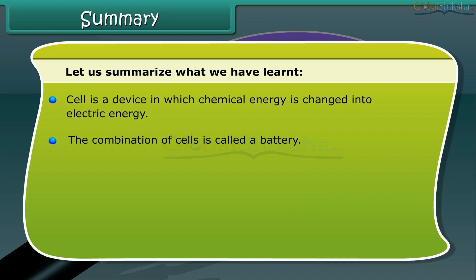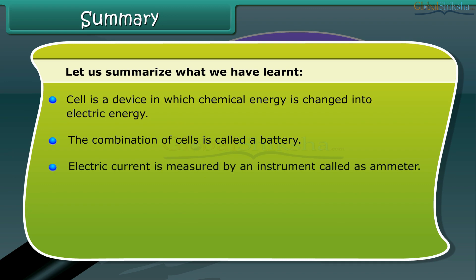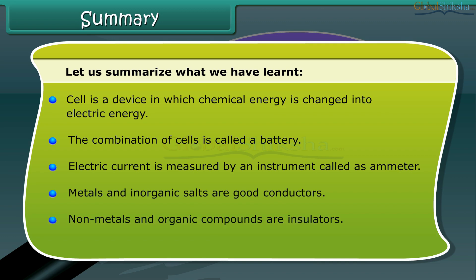A cell is a device in which chemical energy is changed into electric energy. The combination of cells is called a battery. Electric current is measured by an instrument called an ammeter. Metals and inorganic salts are good conductors. Non-metals and organic compounds are insulators.